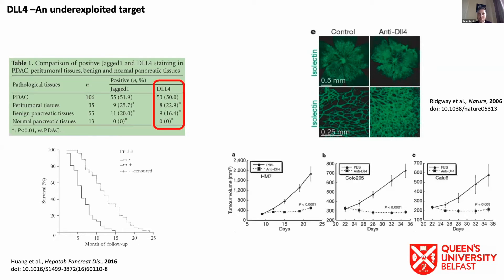On the right-hand side of the screen you can see what you get when you preclinically block DLL4. This results in excessive sprouting vasculature, as demonstrated in these chick chorioallantoic membrane fluorescence images. Whilst you get this hypersprouting, this vasculature is non-functional, and so this likely contributes to an inhibition of tumor growth.